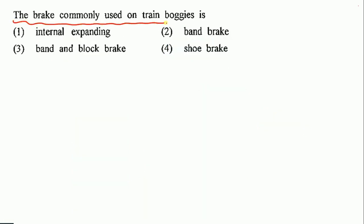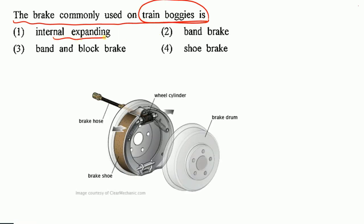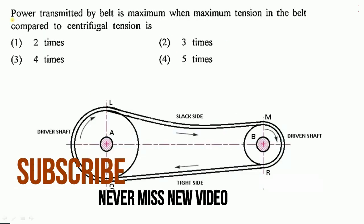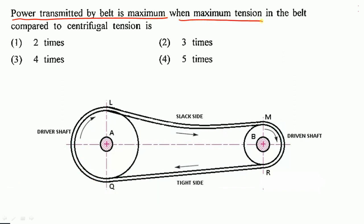The brake commonly used in a train bogey is: internal expanding brake, band brake, band and block brake, or shoe brake? In the train bogey we use internal expanding brakes. So option 1 — internal expanding brake — is the correct option.